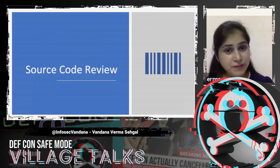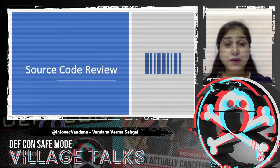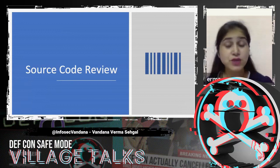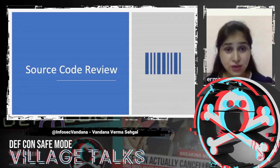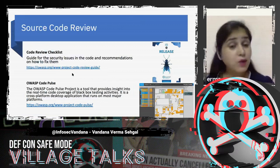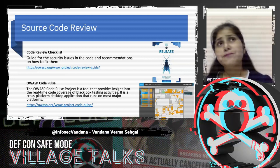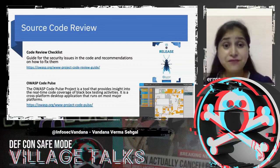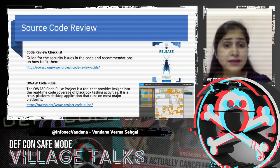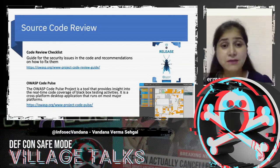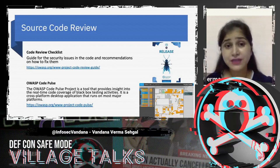Once we have done requirements gathering and threat modeling, we know what we have in the organization. These are the requirements we are building in an application, or this is a new application we are building from scratch. So, once we have that, we are going to work on the code. When we work on the code, we need it to be securely developed. Research shows that fixing a bug in production is a much higher cost than a bug fixed in the development phase, or even earlier — like in requirements gathering or threat modeling — where we talk about what should be fixed now.